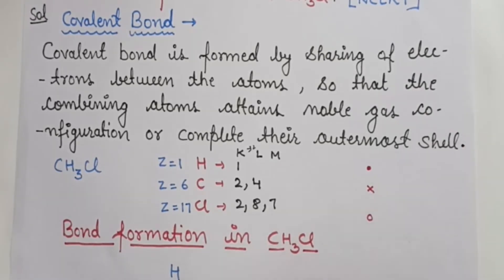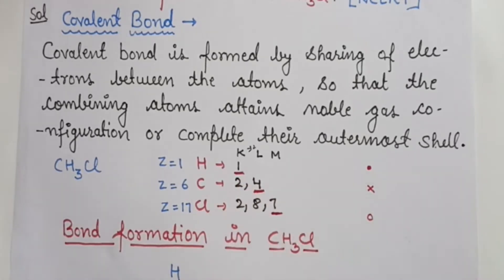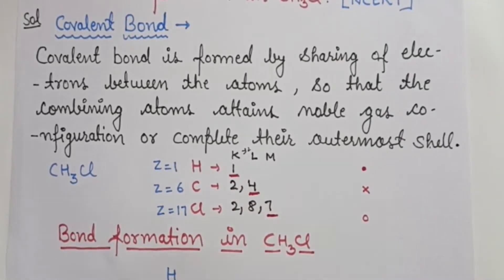Now we have to see how many valence electrons there are, because bond formation involves the outermost shell electrons. Chlorine has 7, carbon has 4, and hydrogen has 1. These are the valence electrons in these atoms.